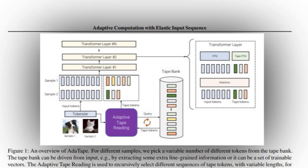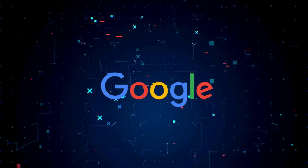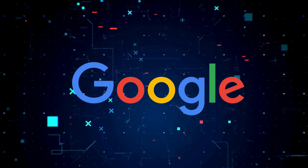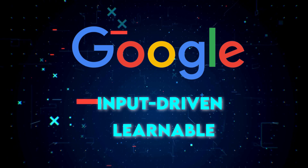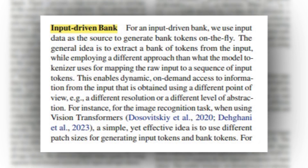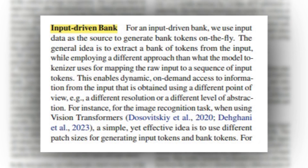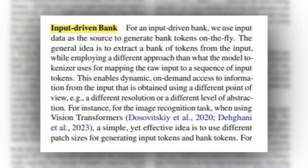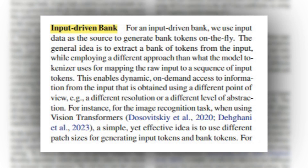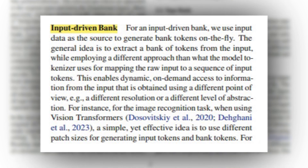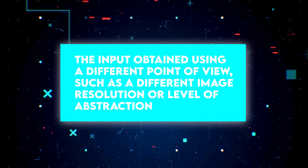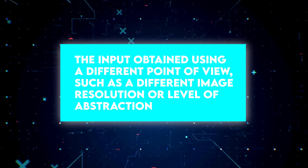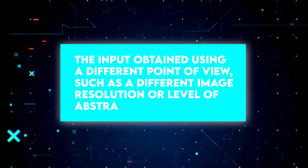To store all the candidate tape tokens that interact with the model through the Adaptive Tape Reading mechanism, Adatape uses a bank of tokens known as the Tape Bank, which Google has explored using two methods: input-driven and learnable. With input-driven, Adatape extracts a bank of tokens from the input using a different approach to the original model tokenizer. This approach allows for dynamic, on-demand access to information from the input obtained using a different point of view, such as a different image resolution or level of abstraction.